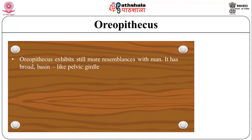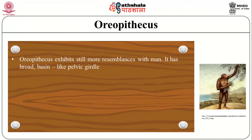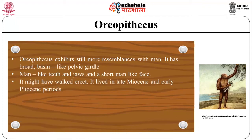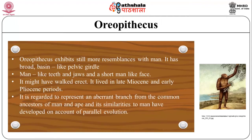Oreopithecus exhibits still more resemblance with man: it had a broad basin-like pelvic girdle, man-like teeth and jaws, and a short man-like face. It might have walked erect and lived in late Miocene and early Pliocene periods. Although so man-like, it is regarded as an aberrant branch from the common ancestor of man and ape, its similarities to man having developed through parallel evolution.